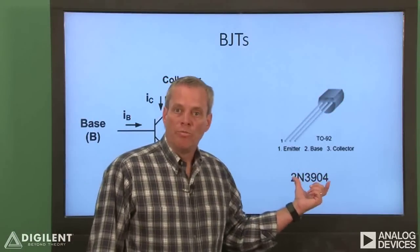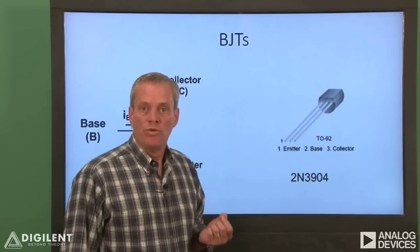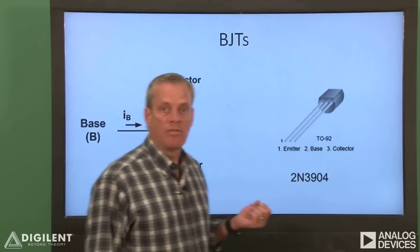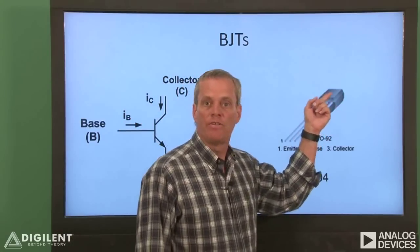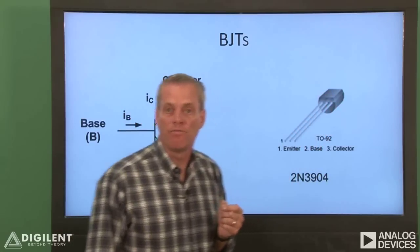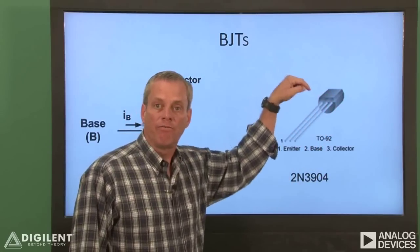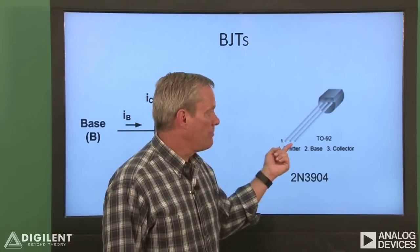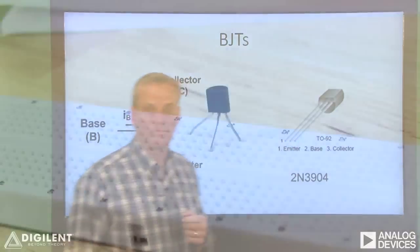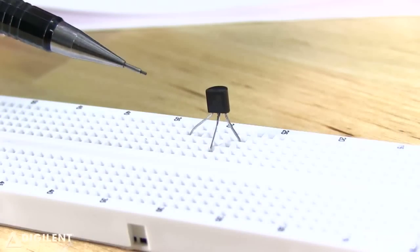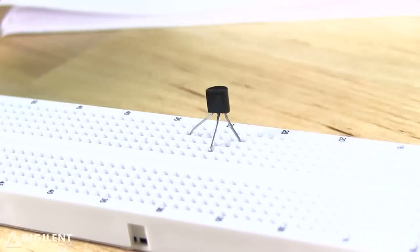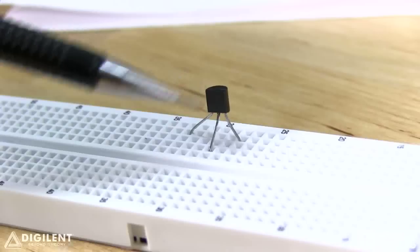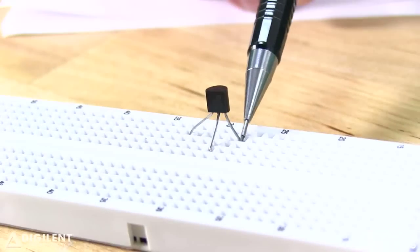This is the BJT we'll be using in our demonstration. It is a 2N3904 BJT. One side of the body is curved, the other side is flat. If you're facing the flat side, the pins are, from left to right, the emitter, the base, and the collector. This is the physical 2N3904 BJT — the pins are the emitter, the base, and the collector.